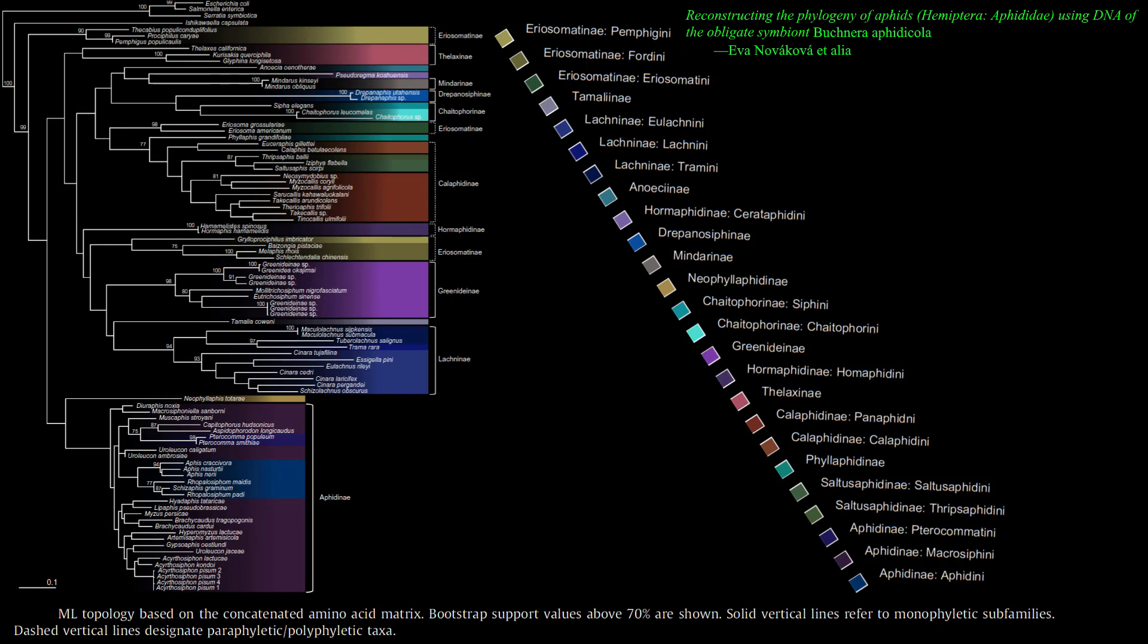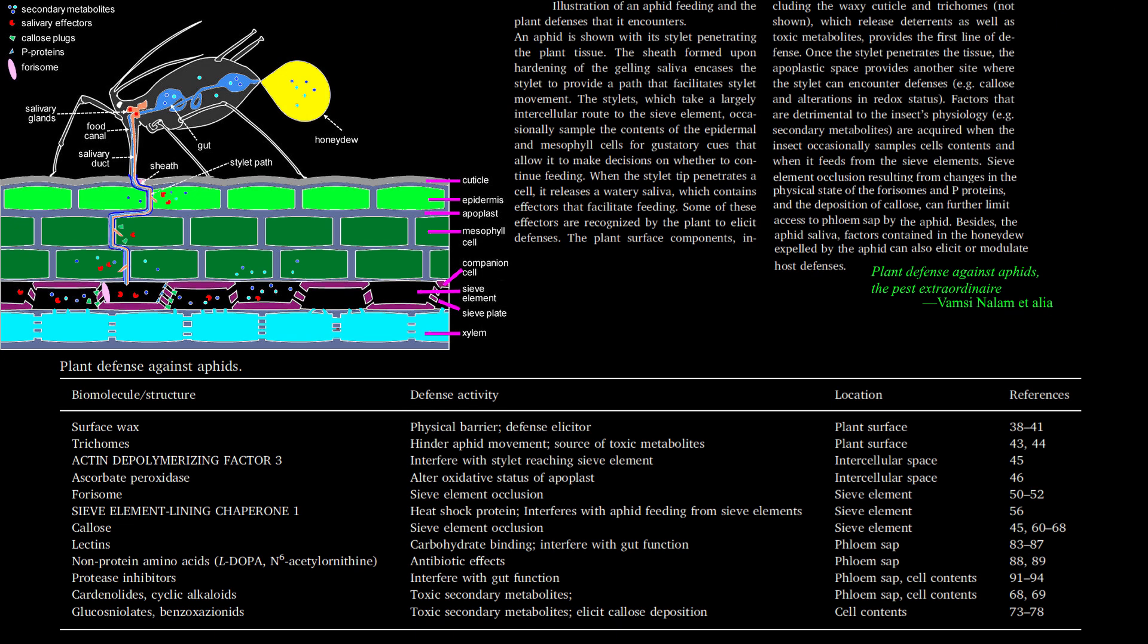Aphids are insects in the superfamily Aphidoidea and most commonly in the family Aphididae, which developed 300 million years ago in the Permian period. Aphids are closely related to others in the suborder Sternorrhyncha, of which they belong, such as whiteflies, scale insects, phylloxerans, and psyllids, which use a mouthpart called a stylet to pierce and uptake plant-based food juices.